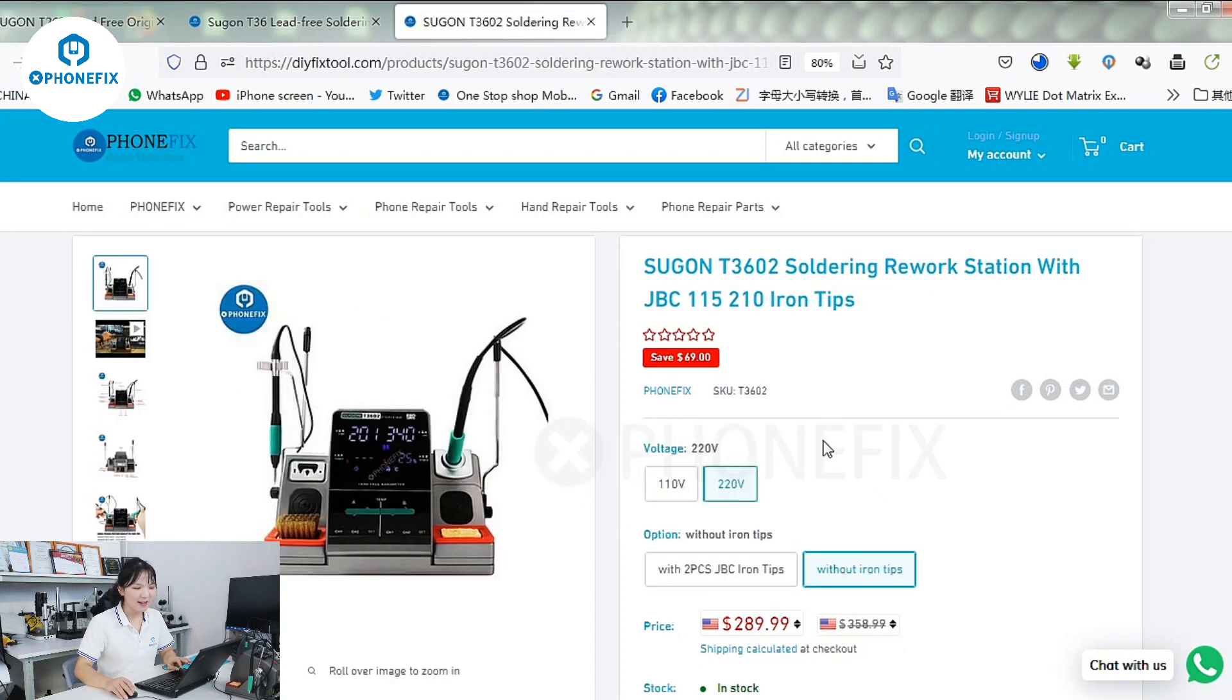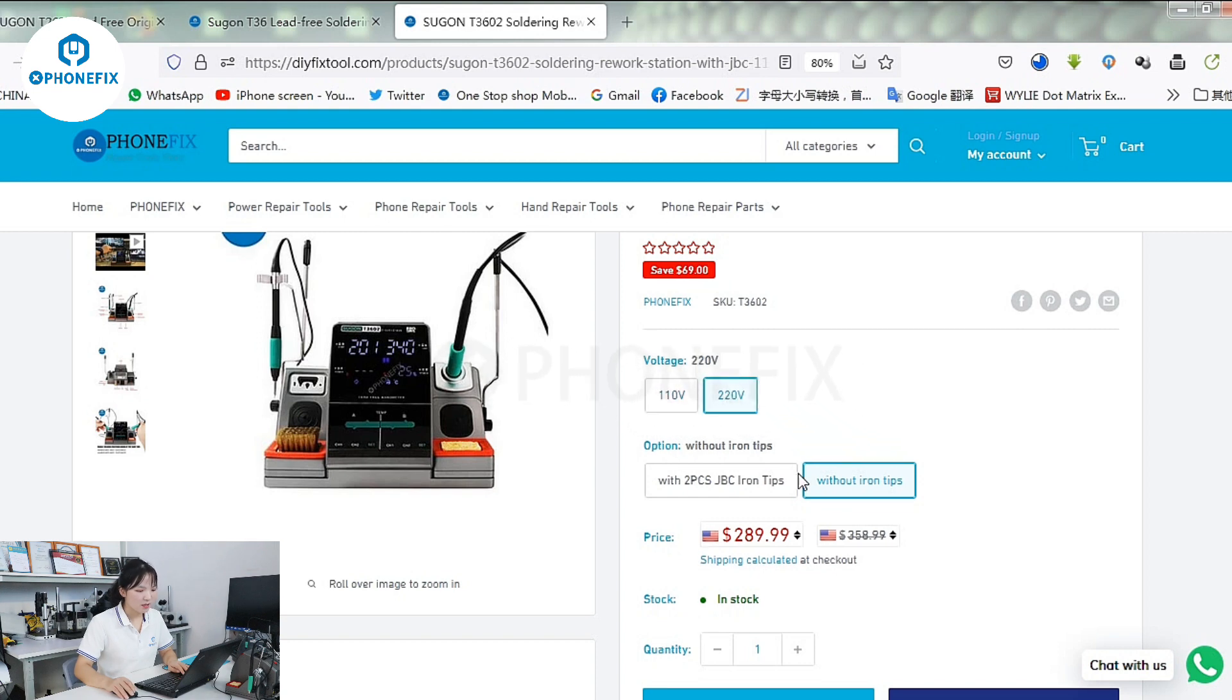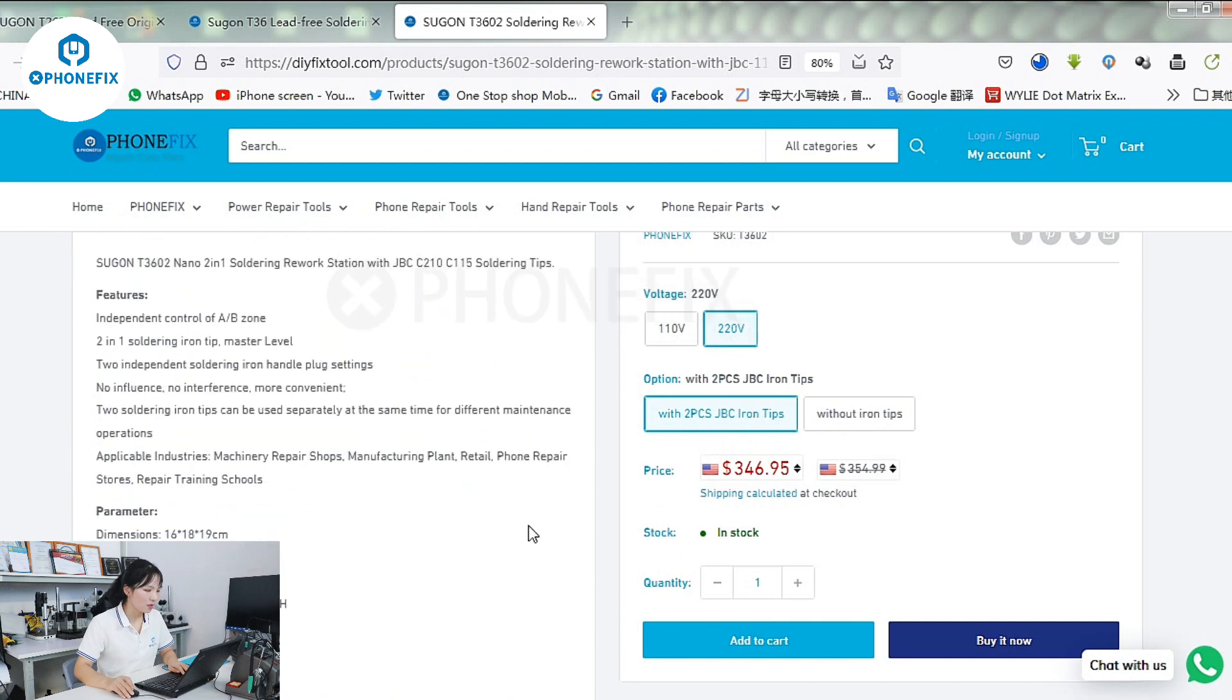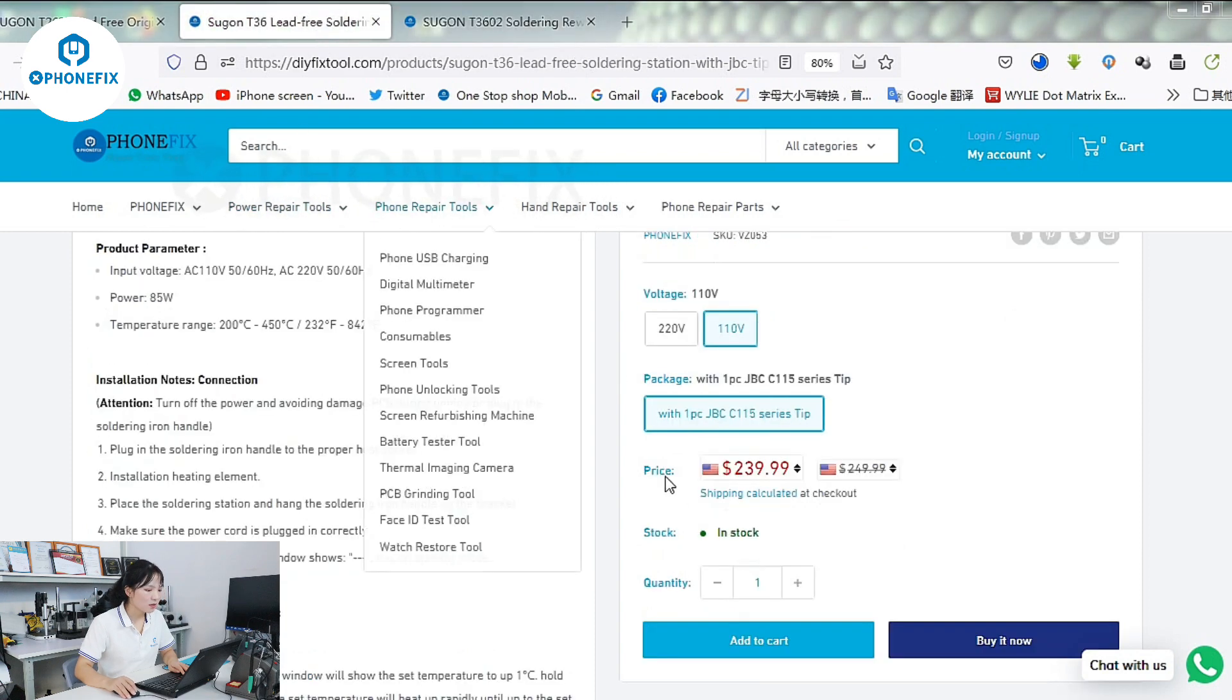This soldering station is designed for the master. We have the two voltage. And we can choose the JBC iron or without it. Here is the list with holder, handle, tips, and manual. Like this one.